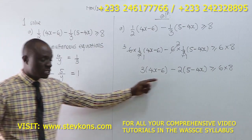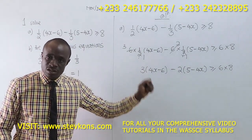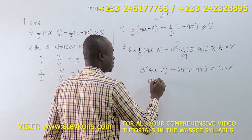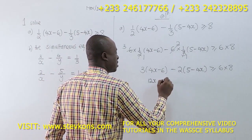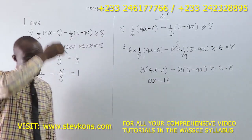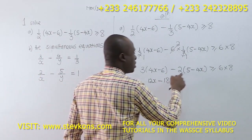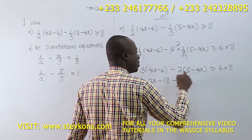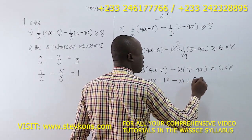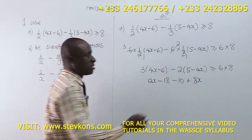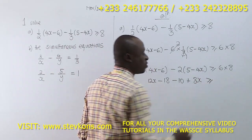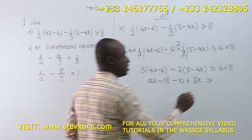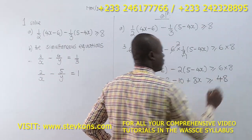Now let's expand using the distributive property. 3 times 4x is 12x. 3 times 6 is 18. Negative 2 times 5 is negative 10. Negative times negative is positive — 2 times 4x is 8x. Greater than or equal to 6 times 8, which is 48. We are allowed to use the calculator.